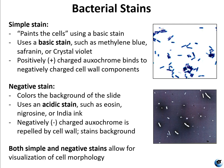The negative stain is exactly the opposite. It uses an acidic dye with a negative charge. Some examples are eosin, nigrosine, or most commonly india ink, which we use in the lab. It is repelled by the cell wall components, so the background gets dyed and the cells stay clear or look white. Both simple and negative stains allow visualization of cell morphology — the shape and arrangement of cells.